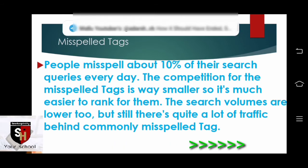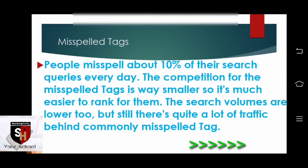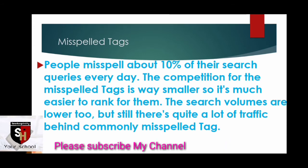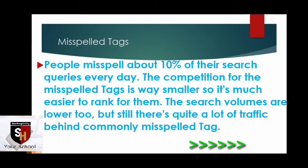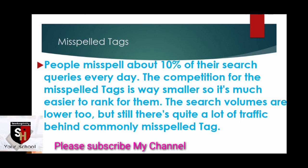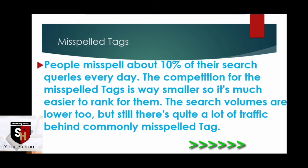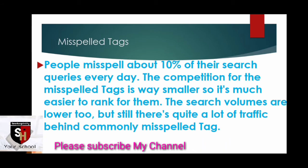The third thing is the misspelled tag. A misspelled tag is related to what we call different spellings — for example, typing Z instead of S. The misspelled tag is very important in India, and plays an important role in Malayalam.